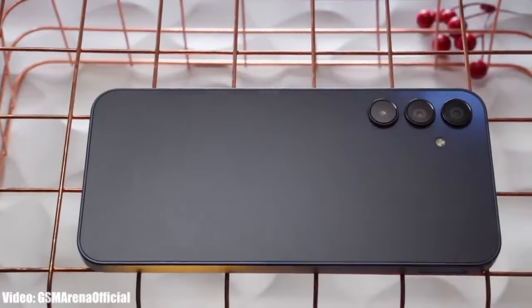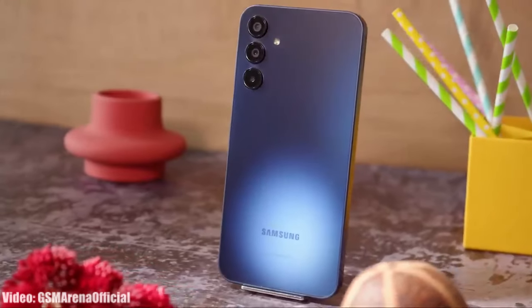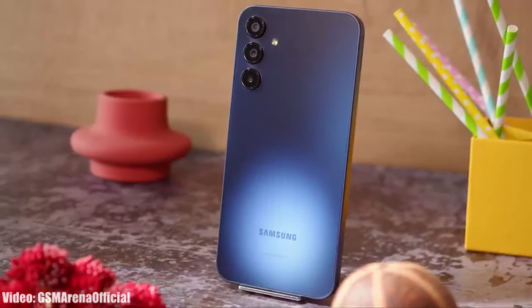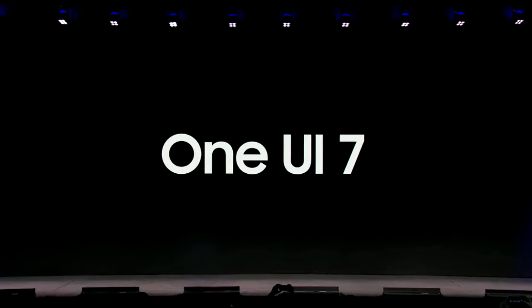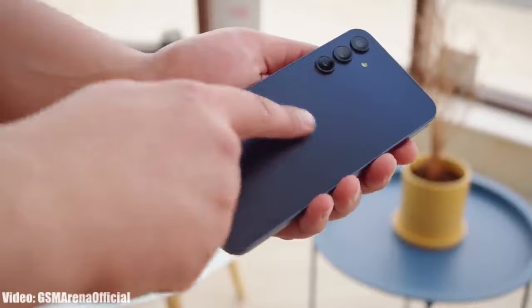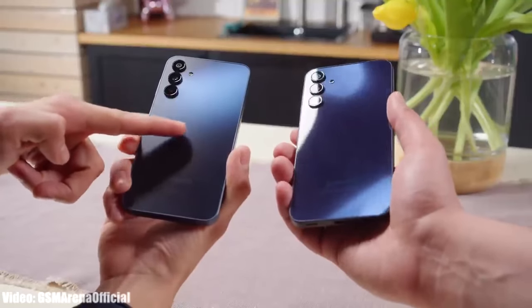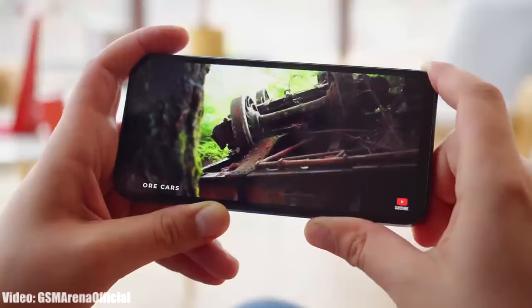Let's talk about the One UI 7 Android 15 update for Galaxy A15. If you have the Galaxy A15 5G or the A15 4G, you will definitely get the One UI 7 Android 15 update from Samsung. This will be the first major Android and One UI update for Galaxy A15. The Galaxy A15 comes with a MediaTek Helio G99 or MediaTek Dimensity 6100 Plus chipset, and both of these chipsets can easily handle the Android 15 One UI 7 update.